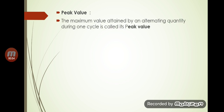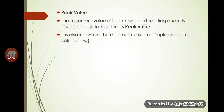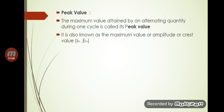Now let us see what is peak value. Peak value is the maximum value attained by an alternating quantity during one cycle. It is also known as amplitude or crest value. Normally we denote it as Im for maximum current and Em for maximum voltage or EMF.